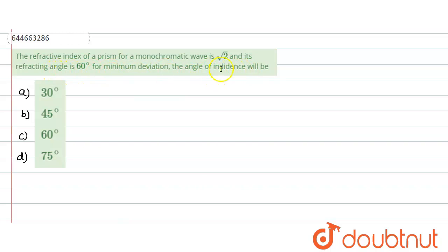Sorry, angle of incidence we need to find. So what are the given conditions here? For example, this is our prism. Refractive index of this material is given as square root of 2. And the angle is given as, this is the angle of the prism. This value is given as 20 degrees, sorry, 60 degrees.